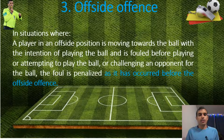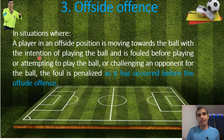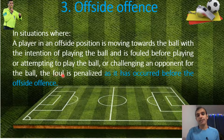Number three: offside offense. Here are two examples. In example one, in situations where a player in an offside position is moving toward the ball with the intention of playing it and is fouled before playing or attempting to play the ball, or challenging an opponent for the ball, the foul is penalized as it occurred before the offside offense.